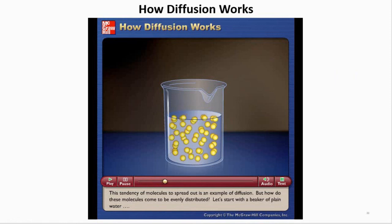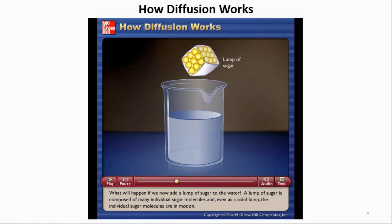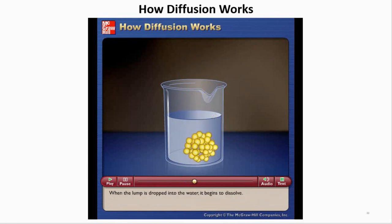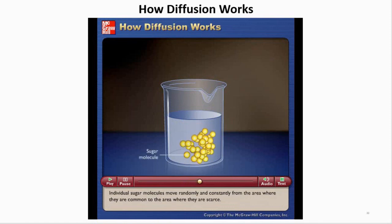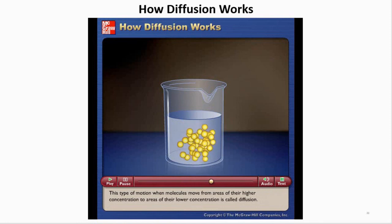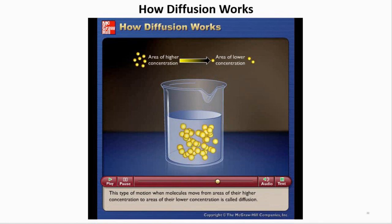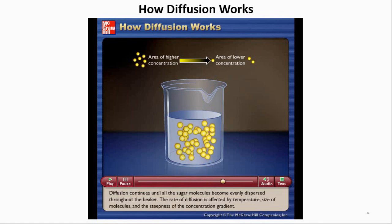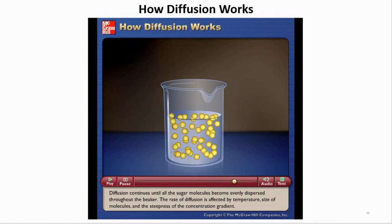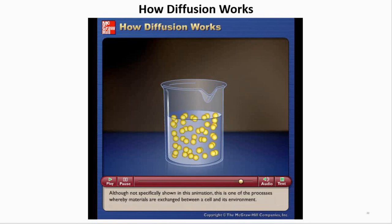Starting with plain water, when a lump of sugar is dropped in, it begins to dissolve. Individual sugar molecules move randomly from areas where they are common to areas where they are scarce — this is diffusion. Diffusion continues until all sugar molecules are evenly dispersed. The rate of diffusion is affected by temperature, size of molecules, and the steepness of the concentration gradient. This is one of the processes whereby materials are exchanged between a cell and its environment.